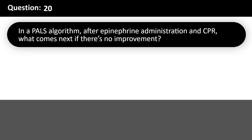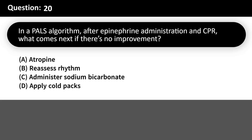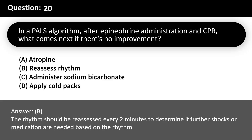In a PALS algorithm, after epinephrine administration and CPR, what comes next if there's no improvement? A. Atropine. B. Reassess rhythm. C. Administer sodium bicarbonate. D. Apply cold packs. Answer: B. The rhythm should be reassessed every 2 minutes to determine if further shocks or medication are needed.